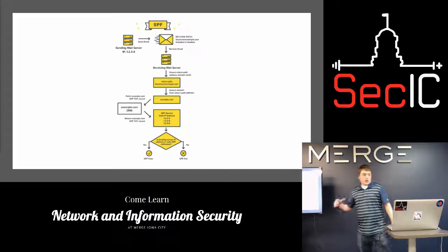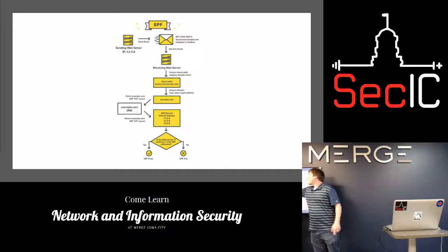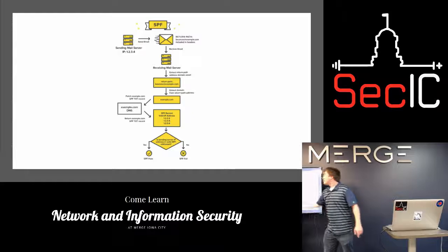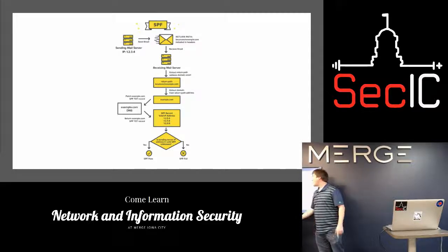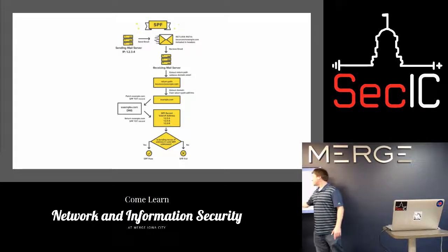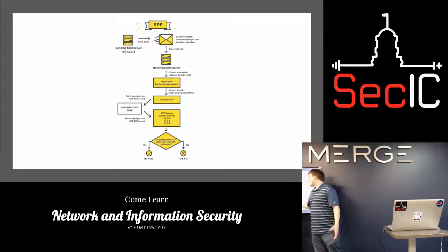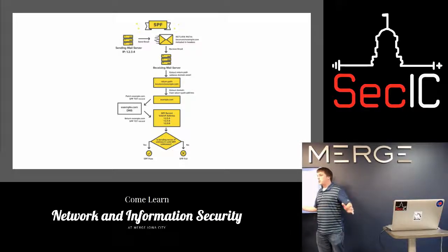This slide shows the actual SPF check process — step five of the first diagram. We have IP address 1.2.3.4, the IP address of the mail server. It sends email with a return path of bounces@example.com included in the headers. It goes to the recipient's email server, which extracts that return path address, sees the domain example.com, then does an SPF check through DNS. It gets that record back and checks: is 1.2.3.4 allowed to send email? Depending on yes or no — if it passes, the email is delivered; if not, it could be marked as spam or rejected entirely.